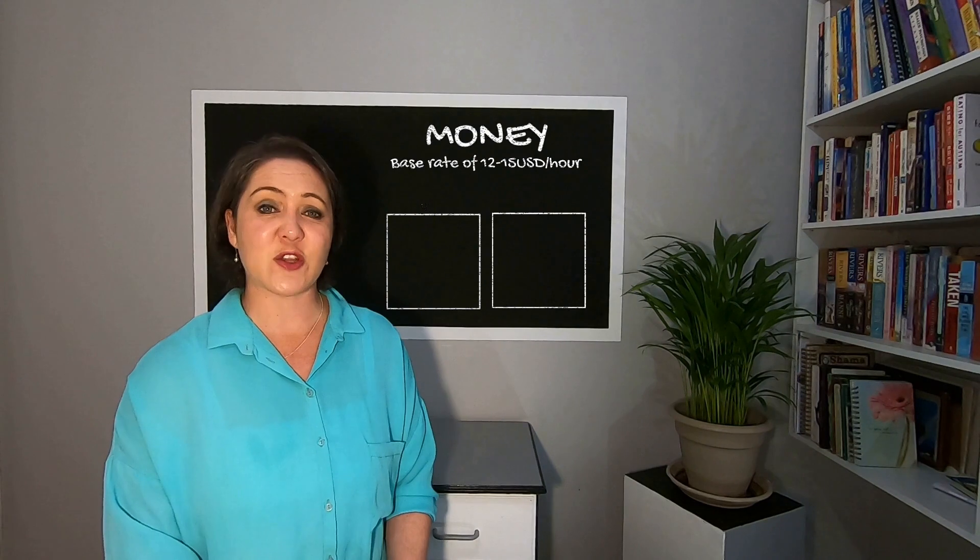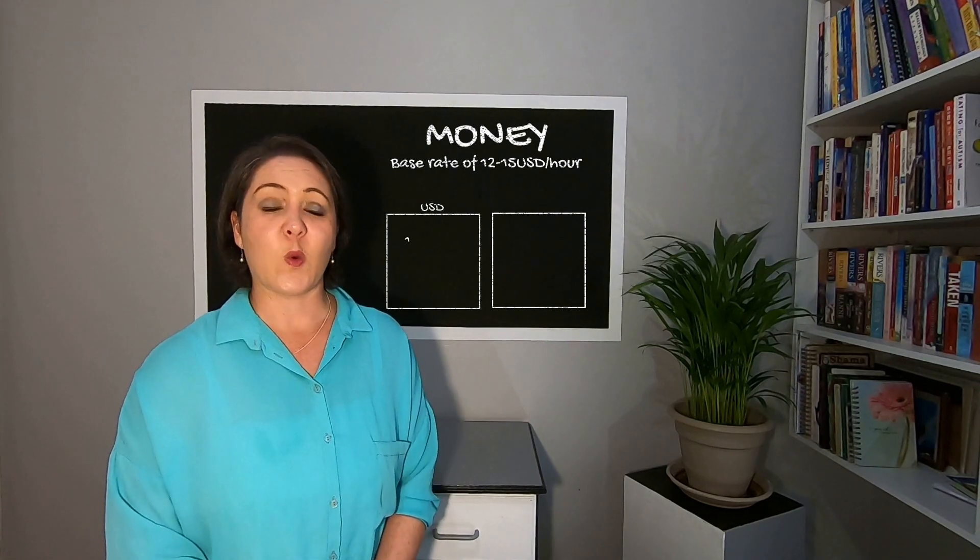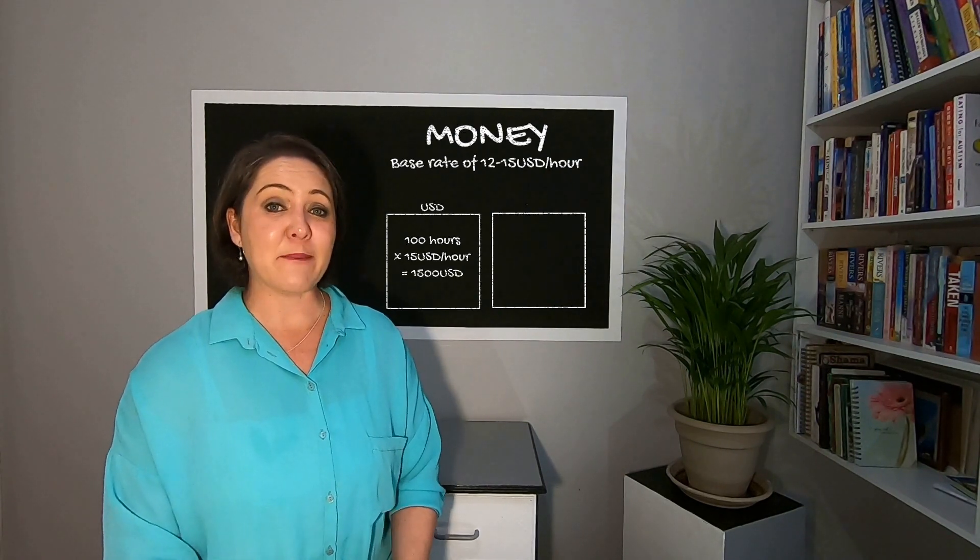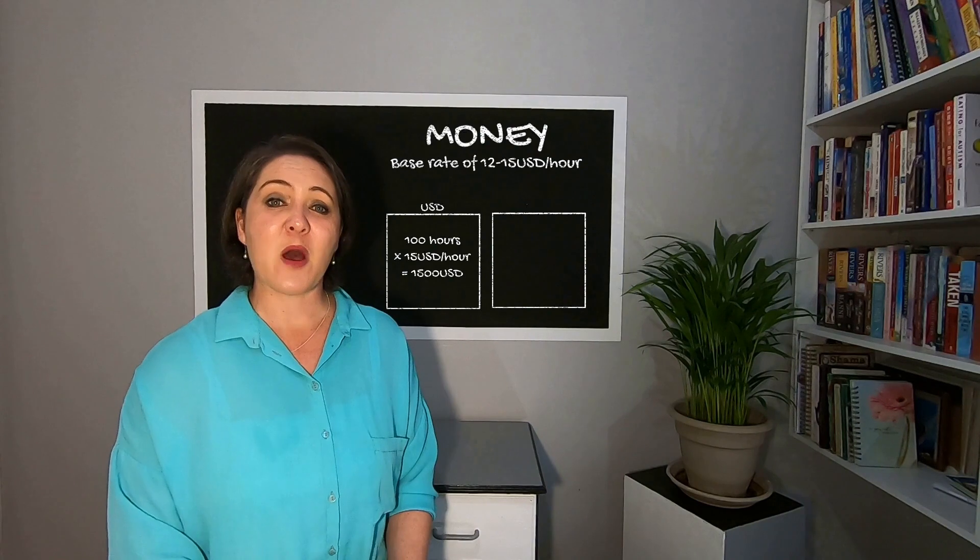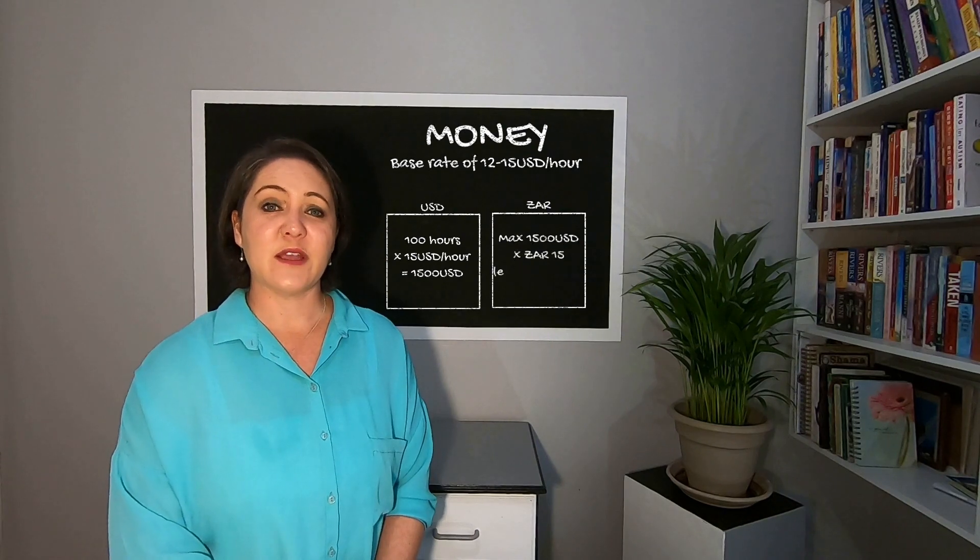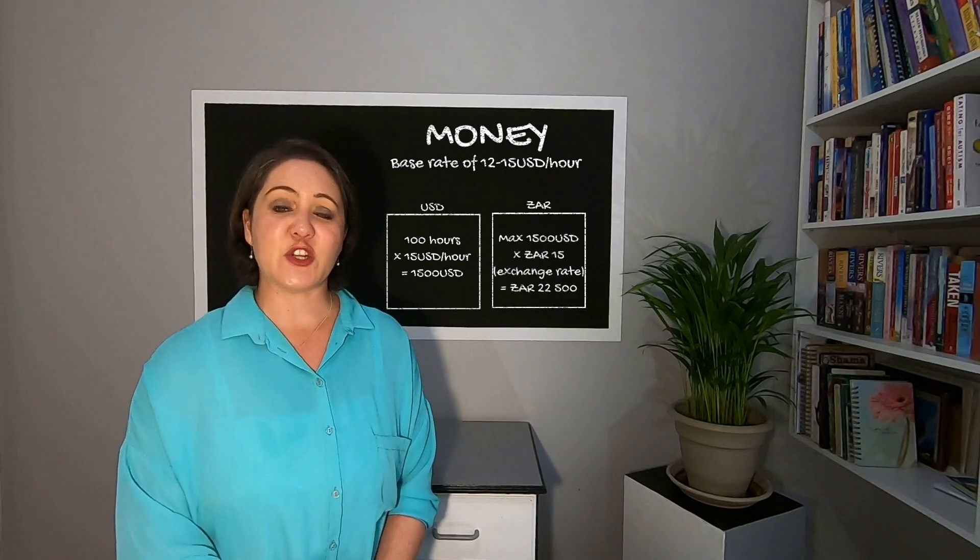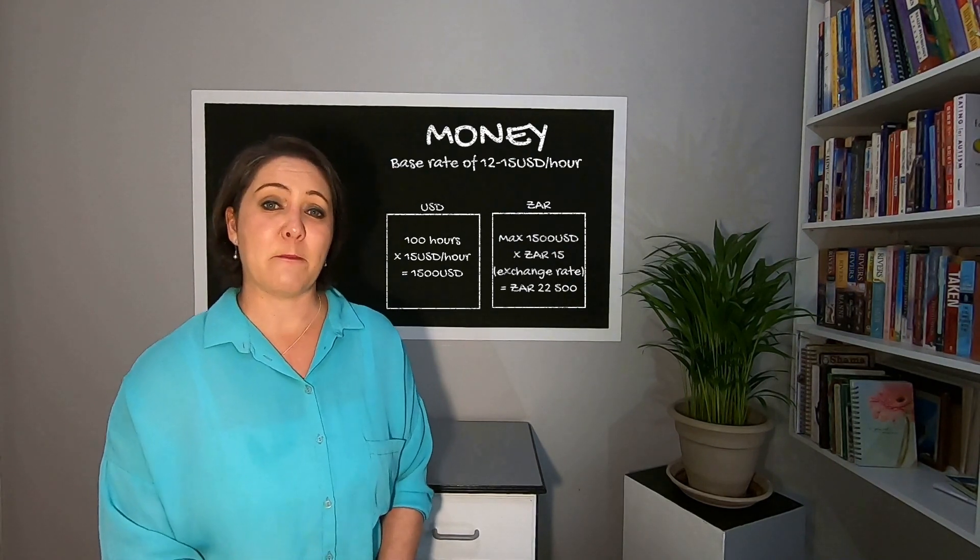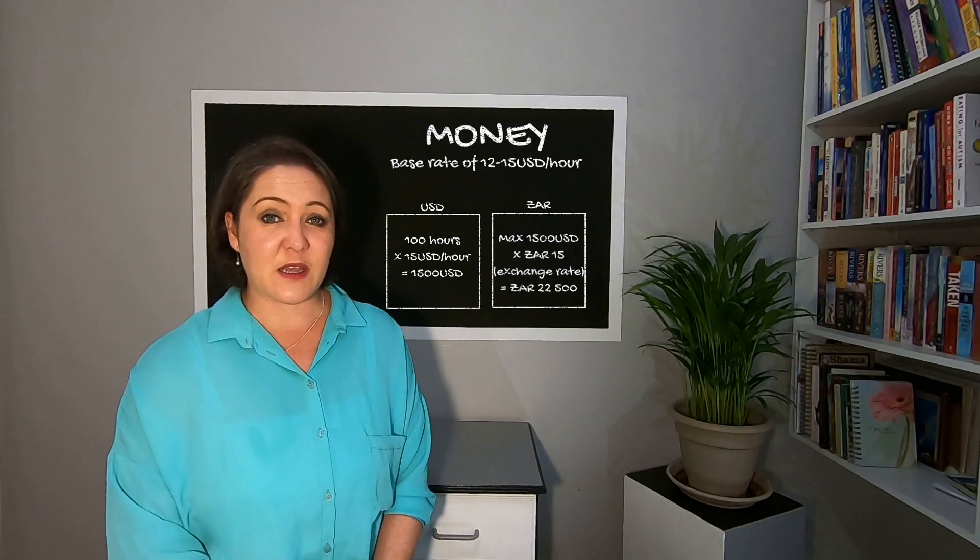As I mentioned, I live in South Africa, so the exchange rate is based on where I live. Let's say that you work 25 hours a week or 100 hours a month at a base rate of $15 an hour. That means that you could earn a maximum of $1,500 a month. At an exchange rate where $1 gives you 15 Rand, you could potentially earn anything from 18,000 Rand to 22,000 Rand per month. Do remember that you will not always be fully booked, and as the exchange rate fluctuates, your monthly income will also fluctuate.